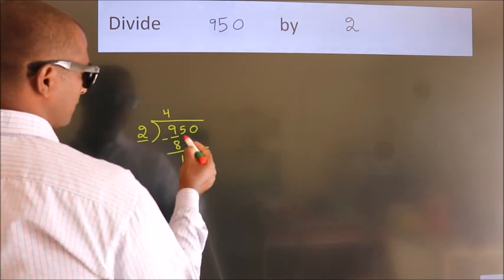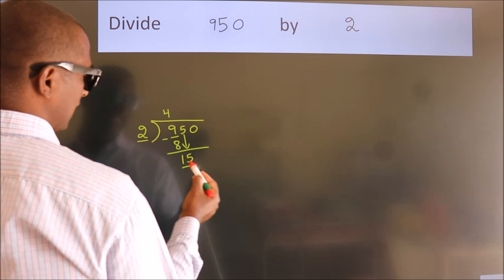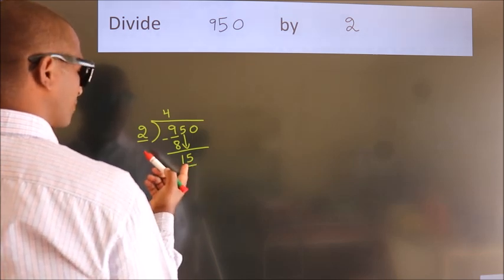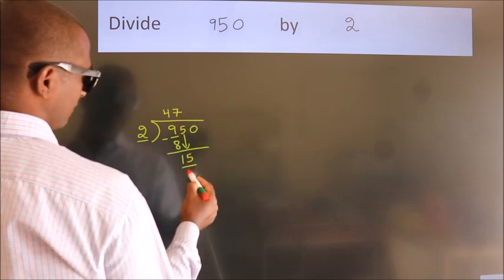After this, bring down the beside number. So 5 down, so 15. A number close to 15 in 2 table is 2 sevenths, 14.